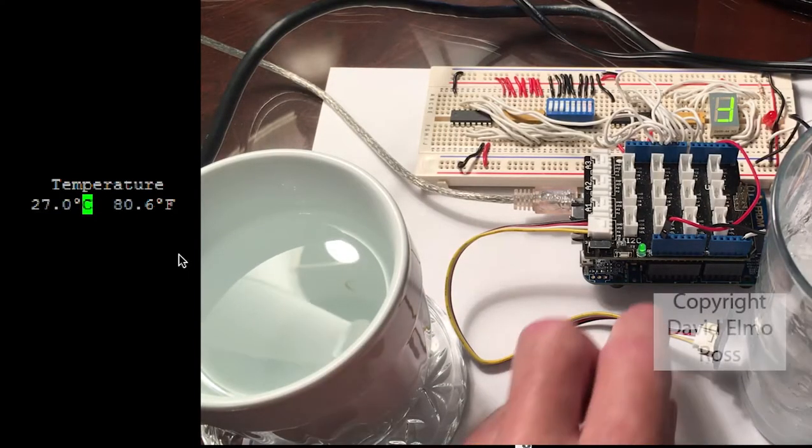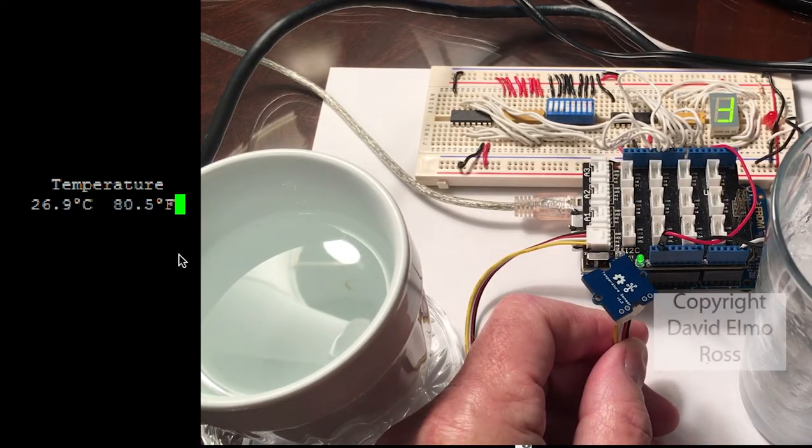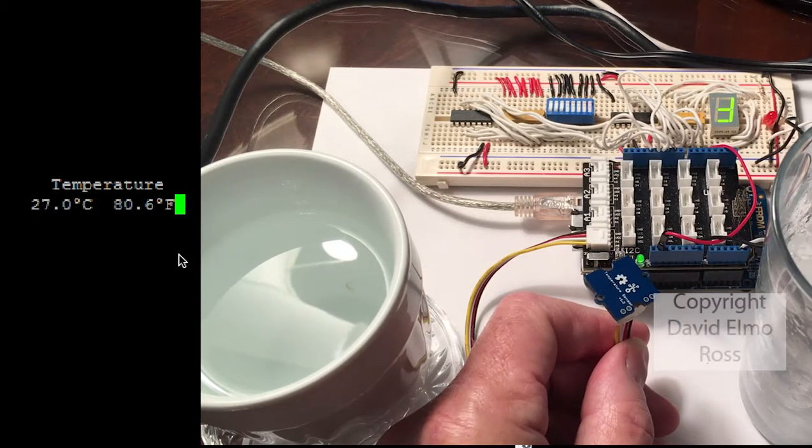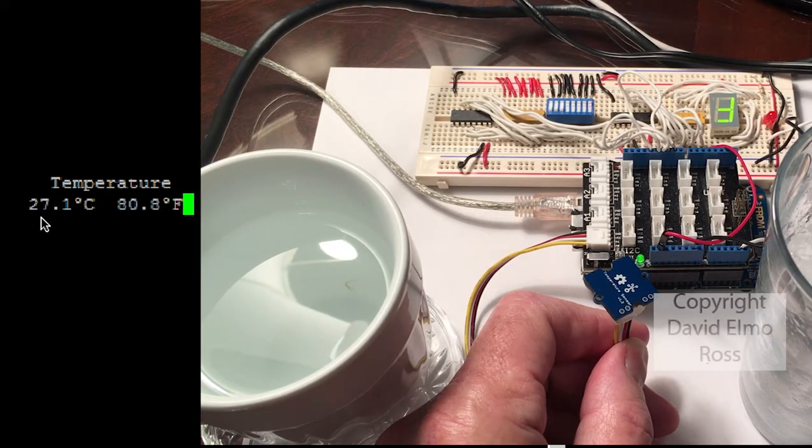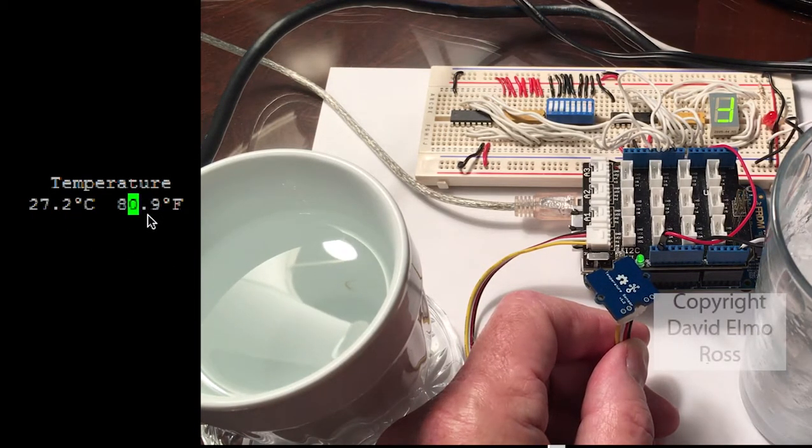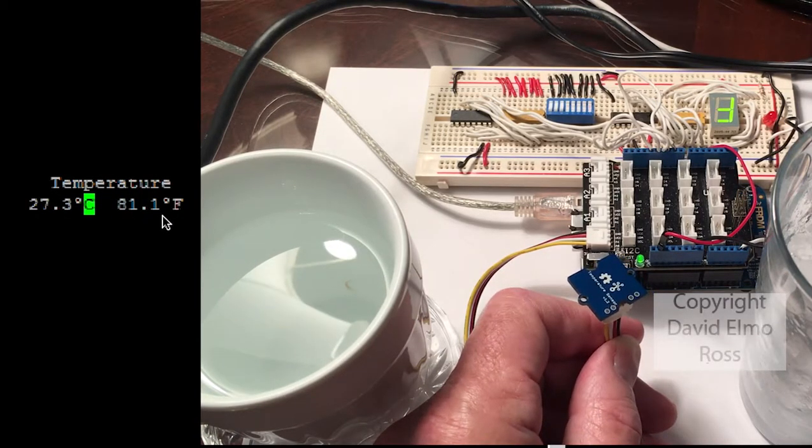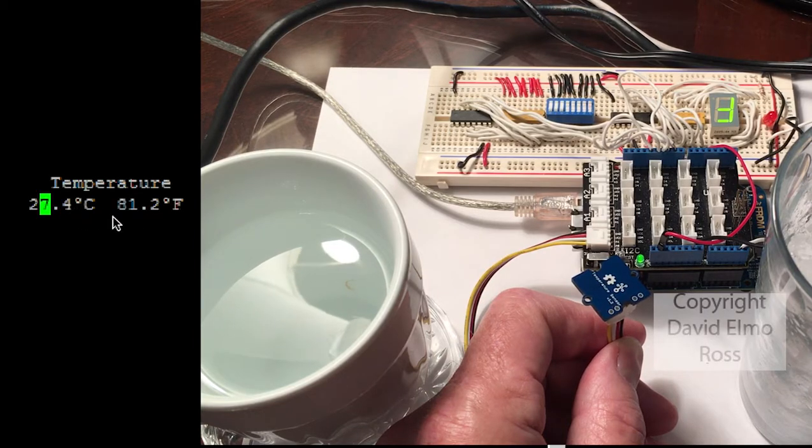Now if we run the program and we have our temperature sensor here, one of the things we can find is that typically right at this time we have 27 degrees Celsius or 80.8 or 80.9 degrees Fahrenheit. So as the temperature fluctuates in the room, this is the ambient temperature.